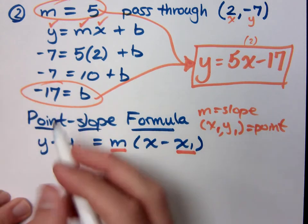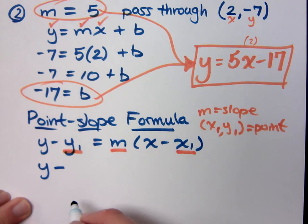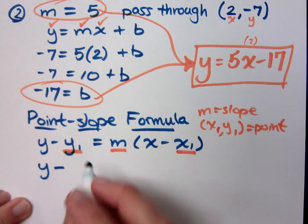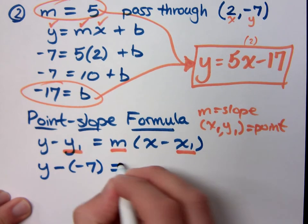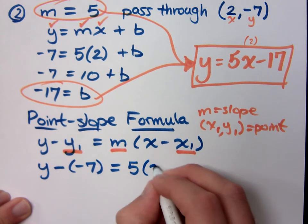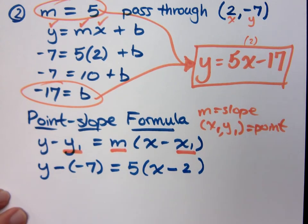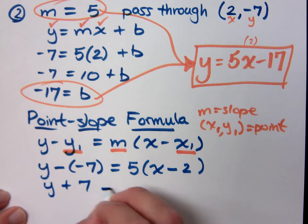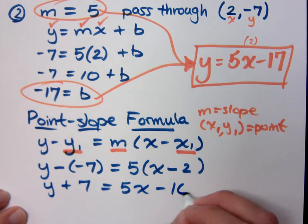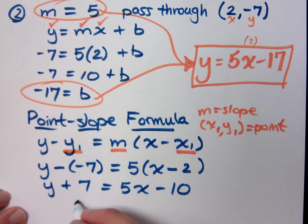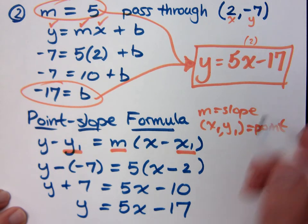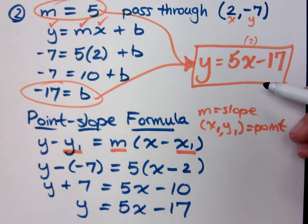So if I go back and I do the same example, I'm going to have y minus, what was y1? What was the y coordinate I was playing around with? Negative 7. Negative 7 equals what's your slope? 5. Times x minus my x1 was 2. So y plus 7 equals 5x minus 10. When I distribute, get y by itself, so what does y equal? 5x minus 17. Are you even kidding me? Look at this. C'est la même chose. That's right.